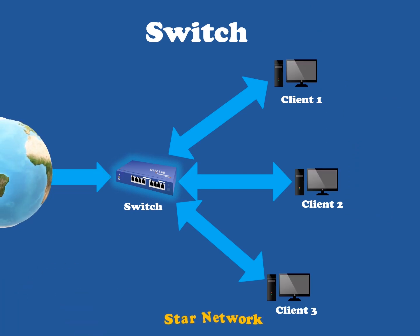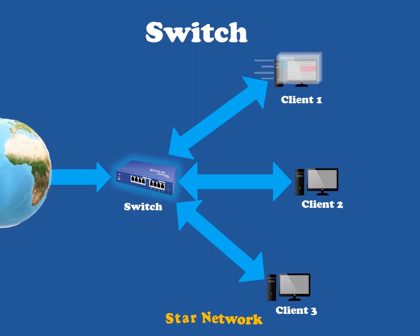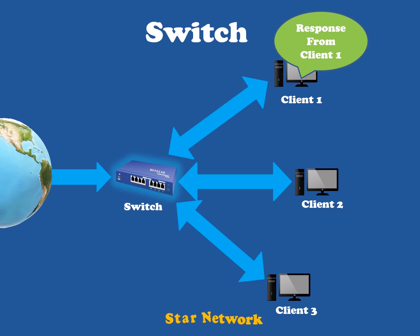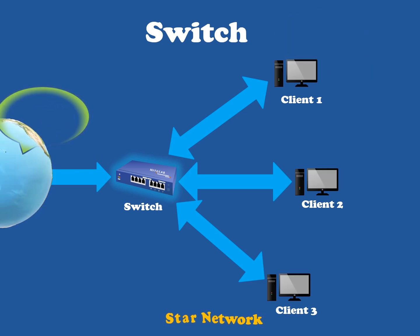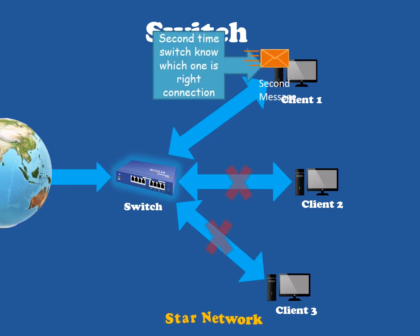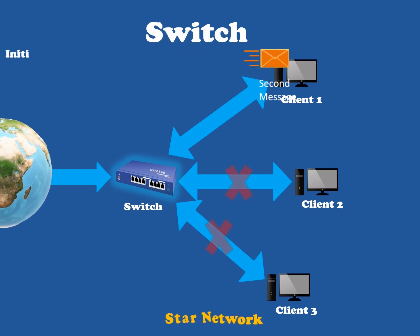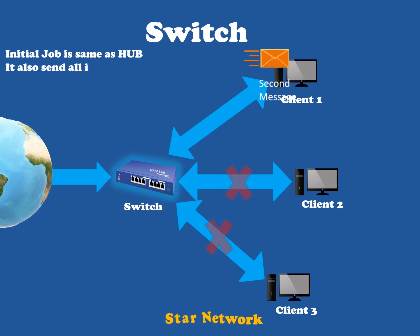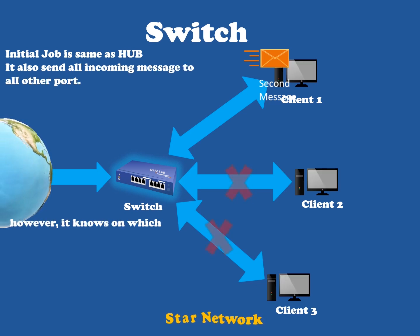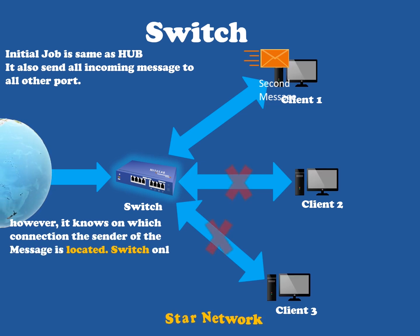When client one replies to the message, the switch only needs to send that message out to the one connection. By sending out the reply, the switch now recognizes on which connection client one is placed. That means subsequent messages destined for client one need only be sent to that one port. Switches learn the position of the devices they are connected to almost immediately. The outcome is that network traffic only goes wherever it needs to, rather than to each port, which on busy networks can make the network significantly faster.